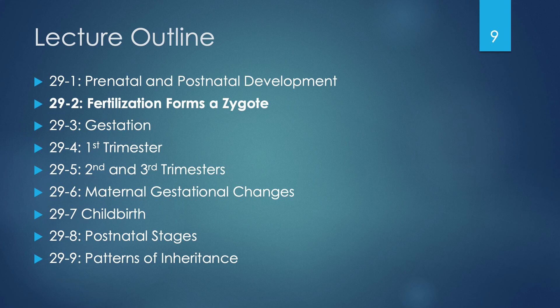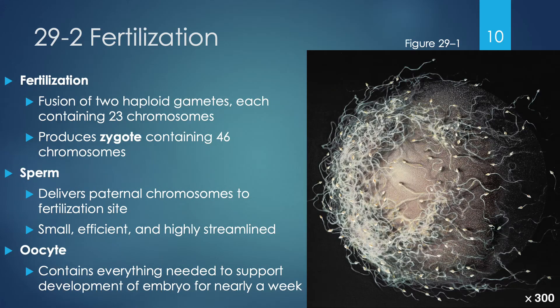Now let's look at section 29.2: how we go from fertilization with two gametes to form a zygote. Fertilization is defined as the fusion of two haploid gametes — each with 23 chromosomes. When the secondary oocyte and the sperm meet, they produce a zygote containing a full complement of 46 chromosomes. The sperm delivers the paternal chromosomes, and the female gamete is the oocyte, which has everything needed to support embryo development for up to a week.